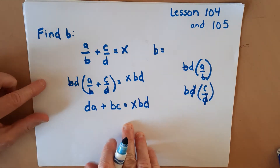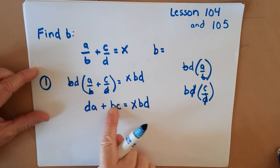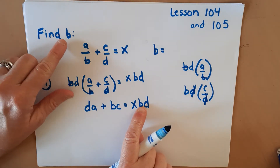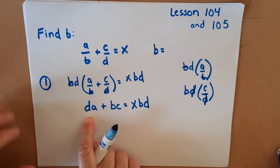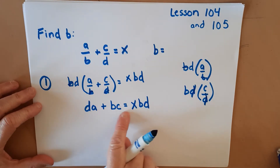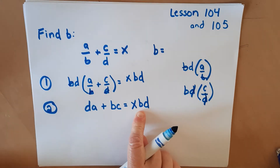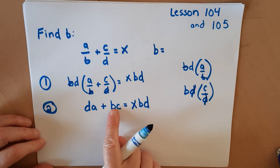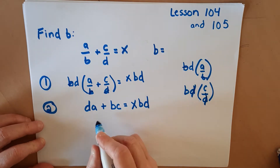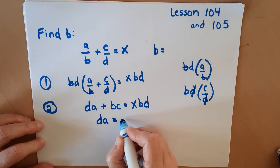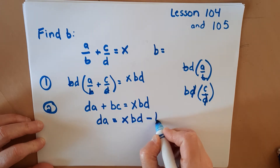That's the first step — get rid of the fractions. The second step is to look at your equation and get all of the B's on one side. In this equation, there is a B on this side and a B on that side. The easiest way to get them both on one side is to subtract BC from each side. That leaves us DA on one side and XBD minus BC on the other.